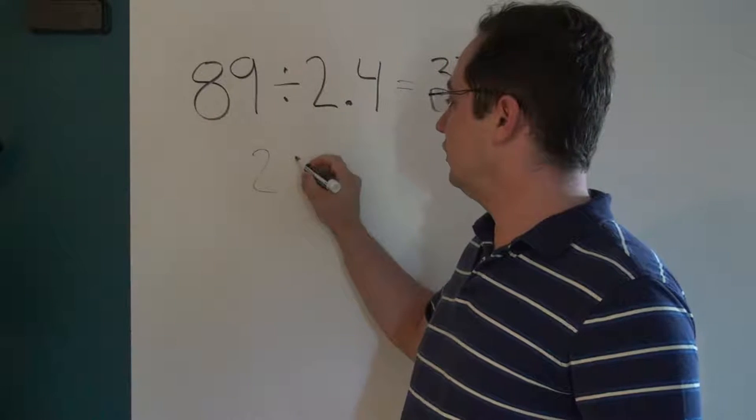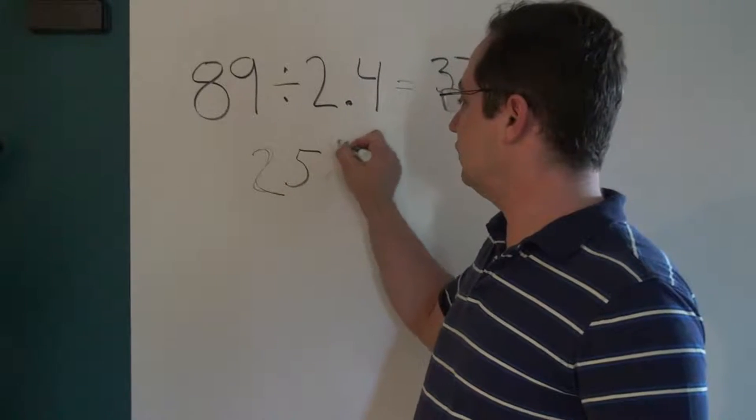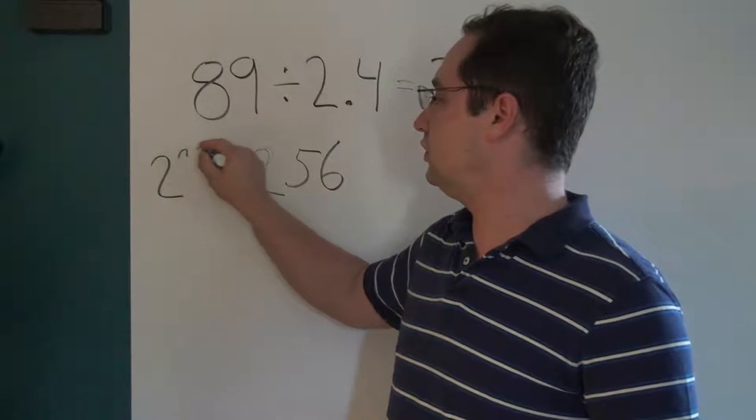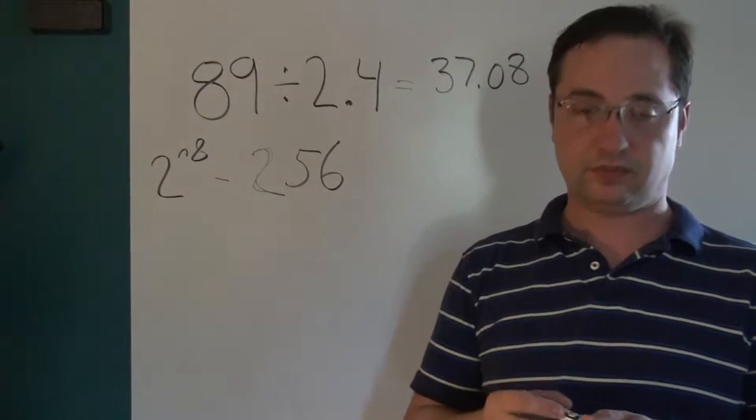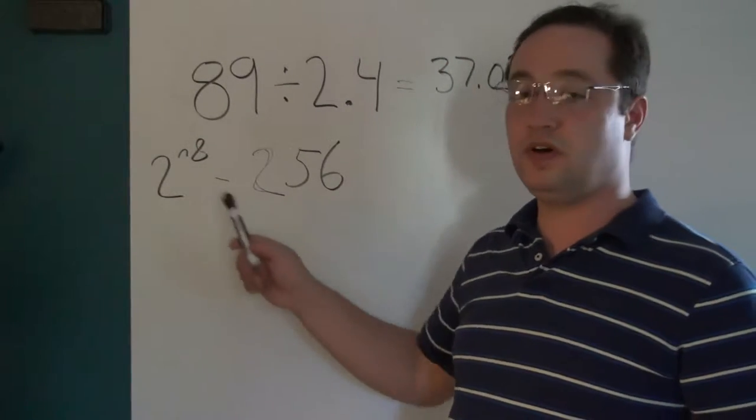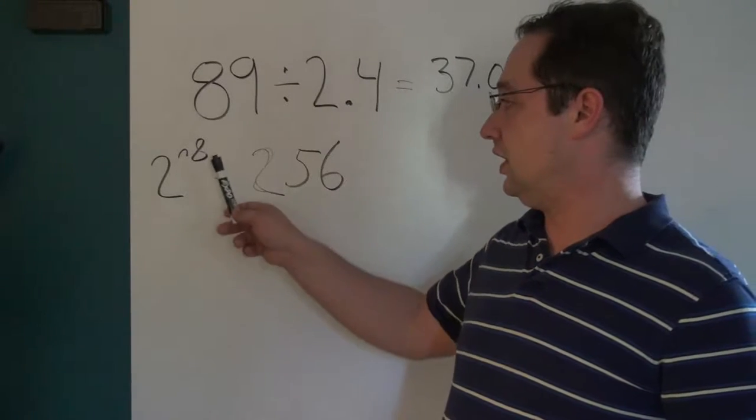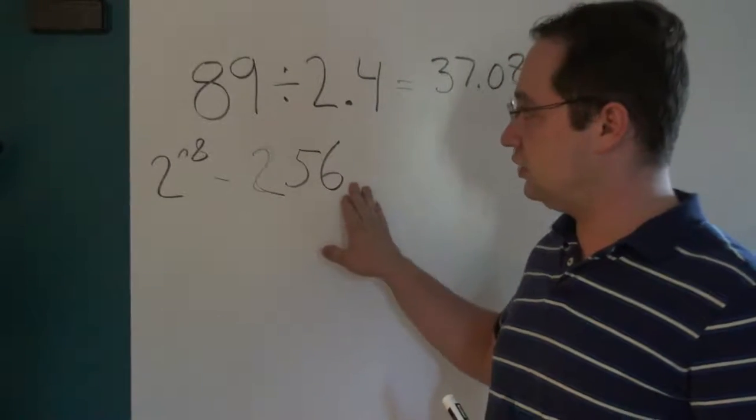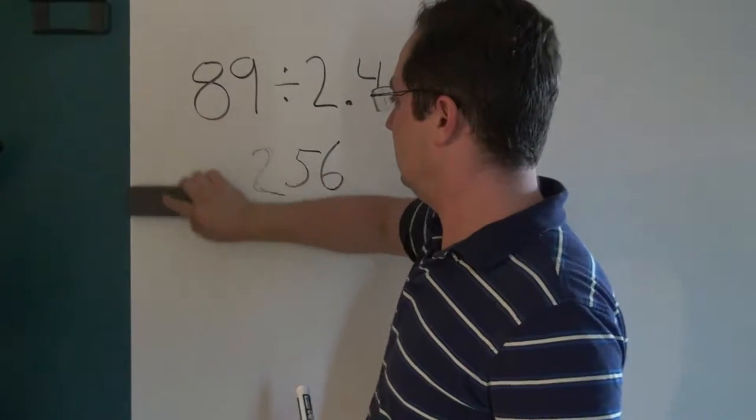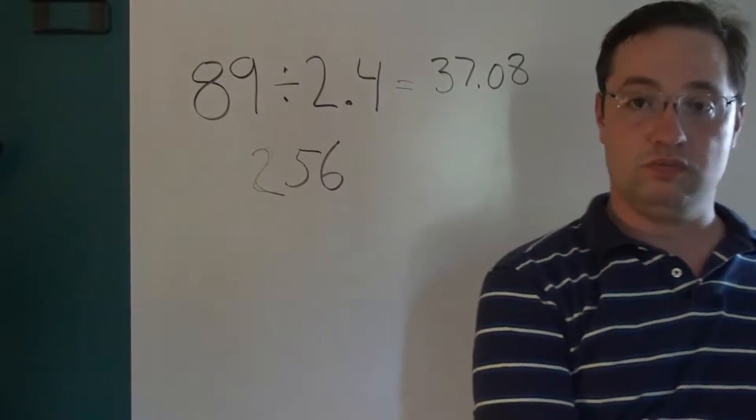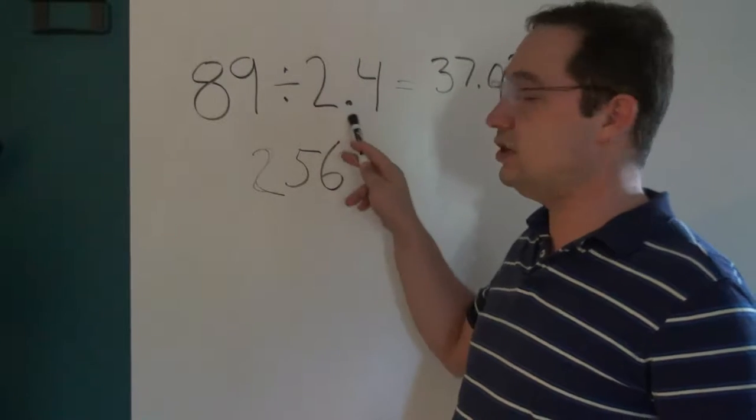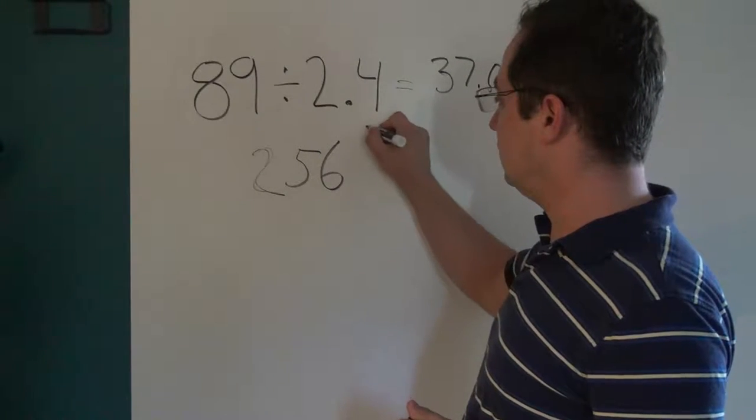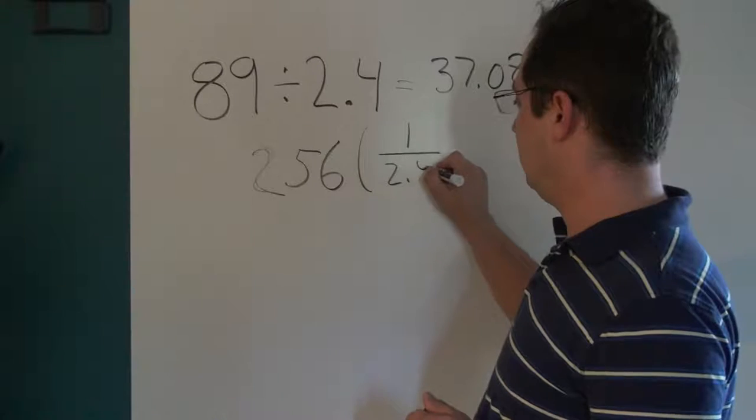256 is 2 to the 8th power. So you could easily divide 256 out by using 8 bit shifts in a row. So now you take 256 and you multiply it by the reciprocal of the number that you're trying to divide by. So it would be 256 times 1 divided by 2.4. What we're doing is we're hiding the division operation inside the 256.